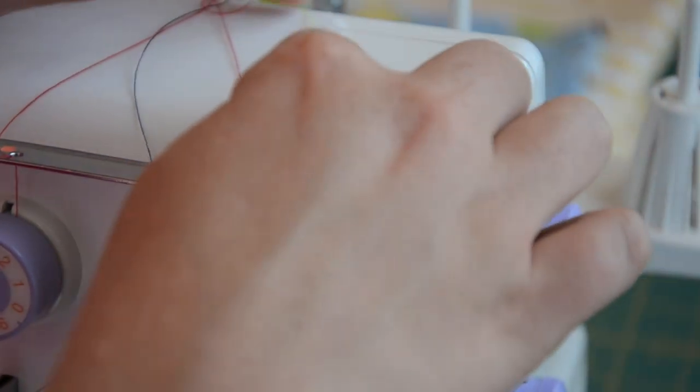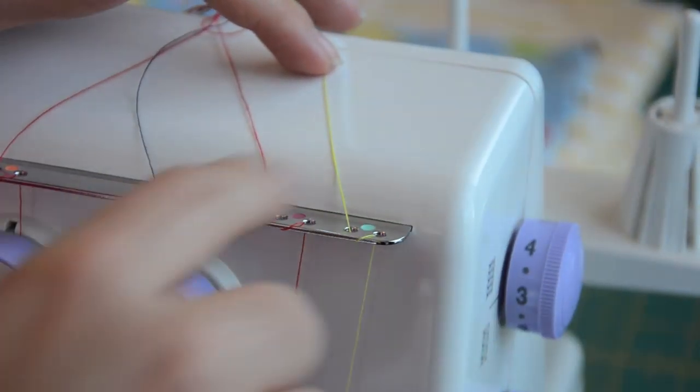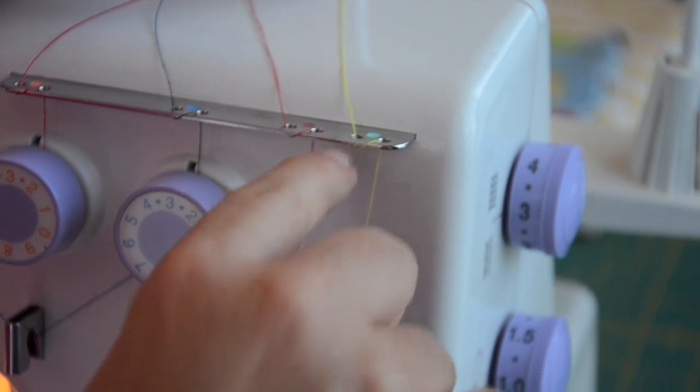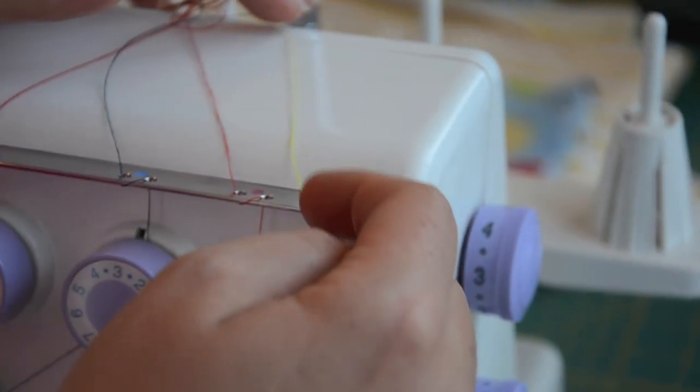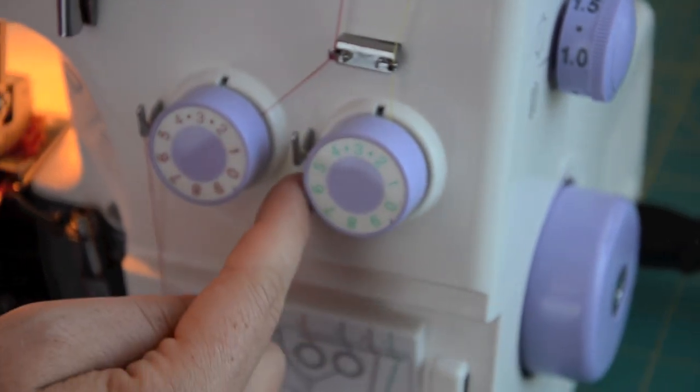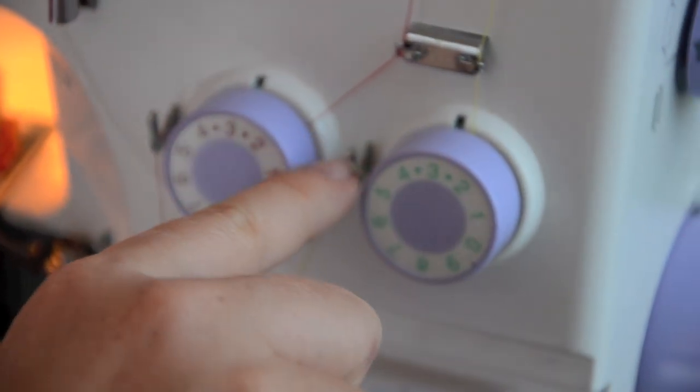So we're going to start with the yellow thread. Everything I read says you start right to left. So you bring it down through the left hole of the green, down through, and then back up and down. You bring it under this knob and over this little hook. Bring it down. It goes through the green hole down here. Right, just straight down through.